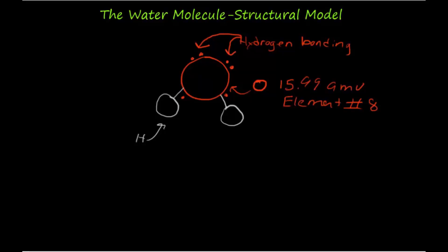The two hydrogen atoms are located here, situated about 104.4 degrees apart from one another. Hydrogen has a weight of 1.00 grams in atomic mass units and corresponds to element number 1 of the periodic table. Hydrogen has only one electron and therefore only one electron available in its outer shell, which I will place near each hydrogen atom.